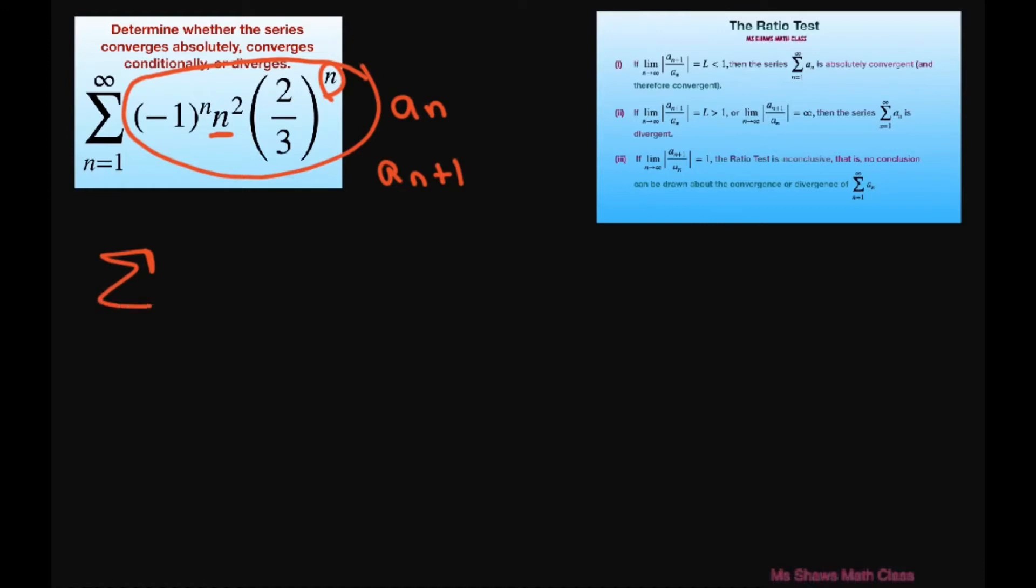So basically we're going to use the sum from n equals 1 to infinity and we're looking at just the absolute value of a sub n. So we don't need this part here. And this is going to equal the sum from n equals 1 to infinity of n squared times 2 thirds to the power of n.